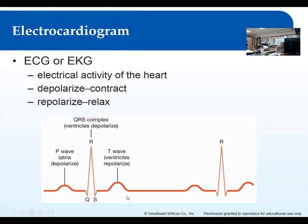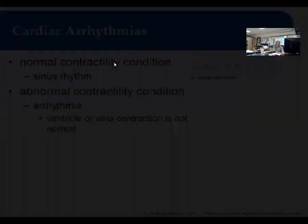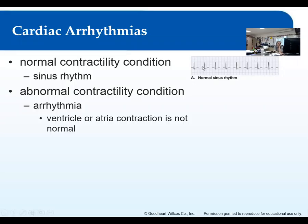Then you have the QRS complex — it dips down a little and goes way up because that is when the ventricles depolarize, which is a massive contraction. Remember the ventricles are much larger than the atria. Then the T wave is when the ventricles repolarize — they're resting again. The atria repolarize while the ventricles are depolarizing, but that repolarization doesn't show up on the EKG because there's so much activity from the ventricles at that point.